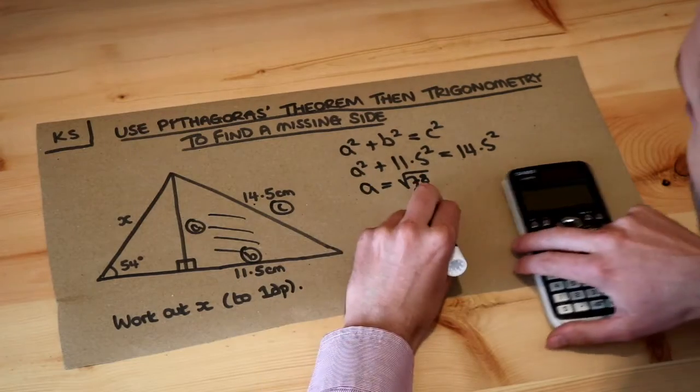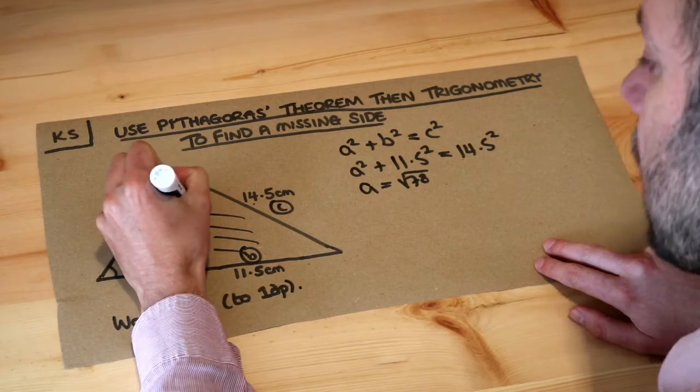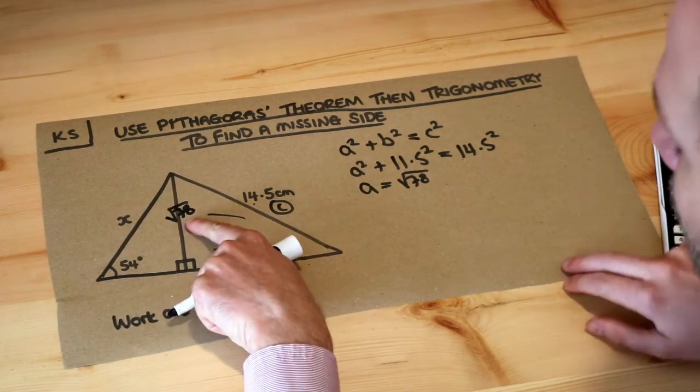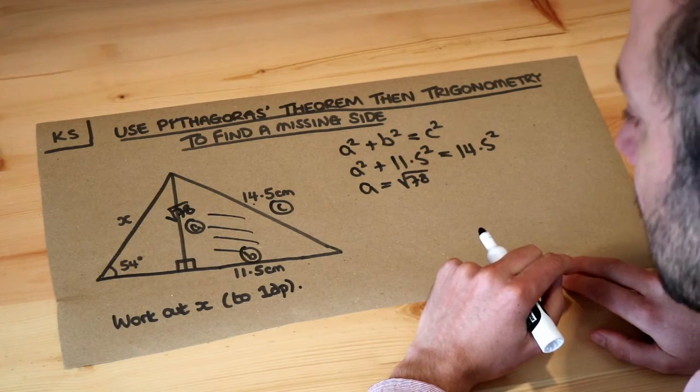And you know what, I don't actually need to work out what the square root of 78 is. I can just leave this as √78 because I can input the square root of 78 directly into my calculator later rather than using what it is as a decimal.